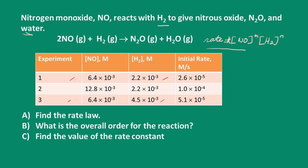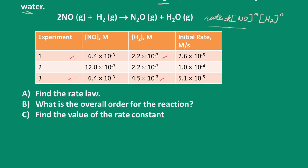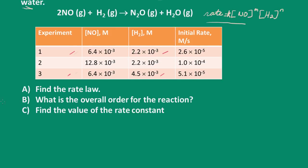What we need to find are these exponents m and n, which correspond to the order with respect to each reactant. So let's start with experiments one and three. We're going to compare these. The concentration of nitrogen monoxide is constant in both experiments, and we double the concentration of hydrogen.